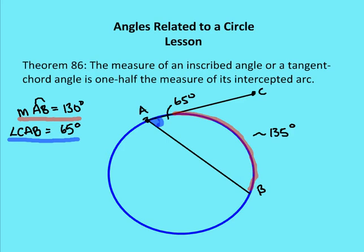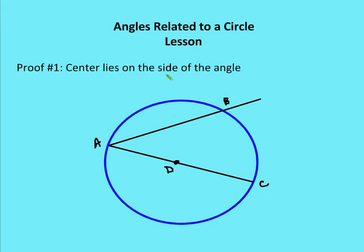How do we know that's true? Let's go through a proof of this theorem. There are three components: one where the center lies on the side of the angle, one where the center is outside, and one where it's inside. We're going to talk about those three proofs individually. The first case: the center lies on the side of the angle.